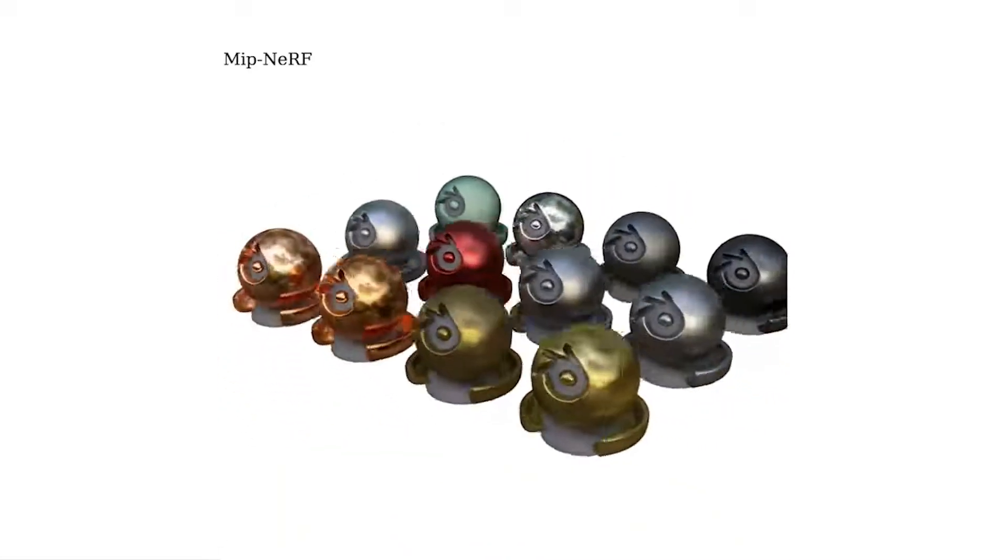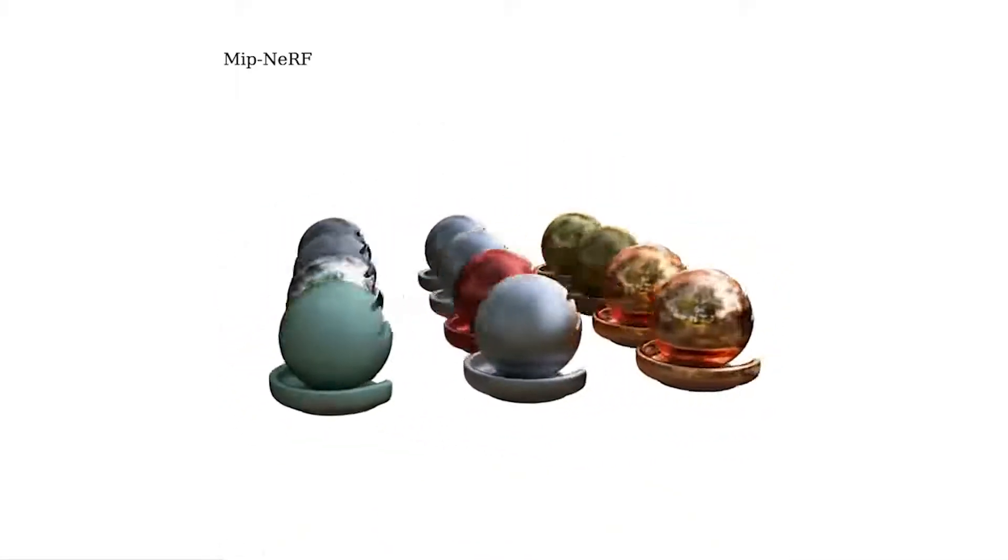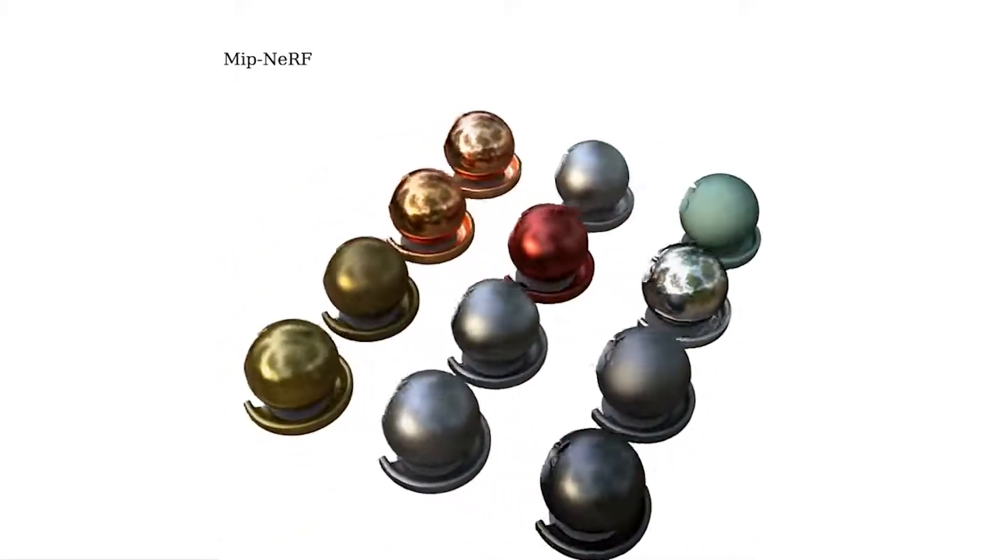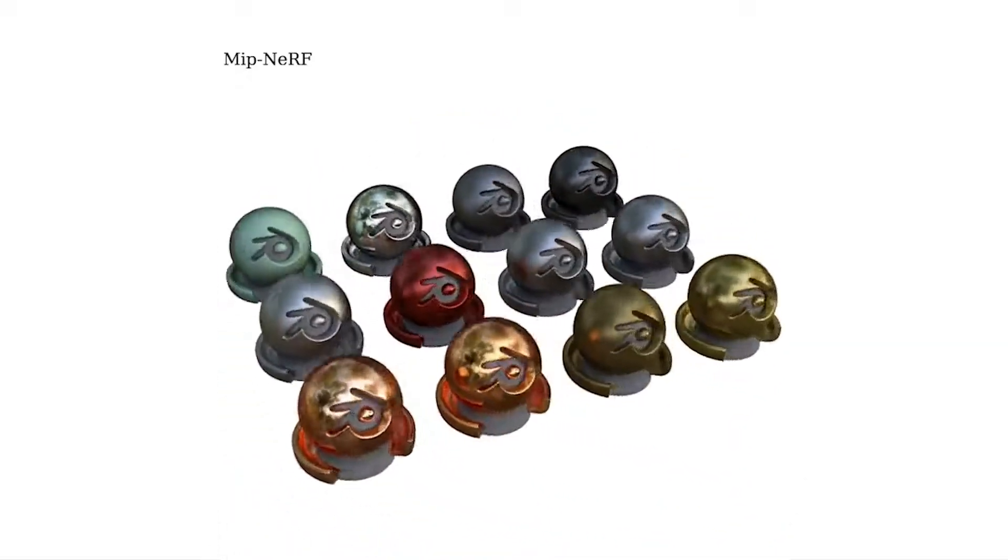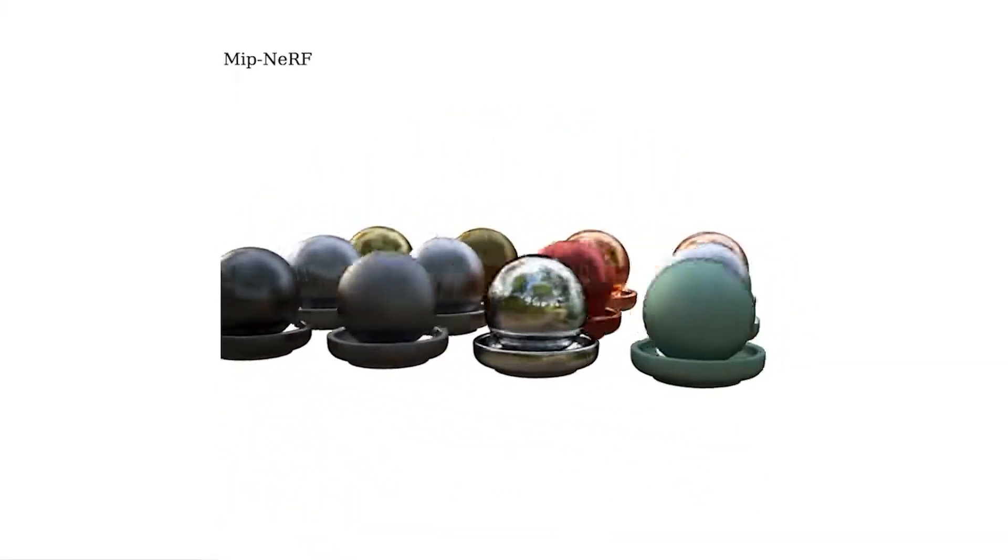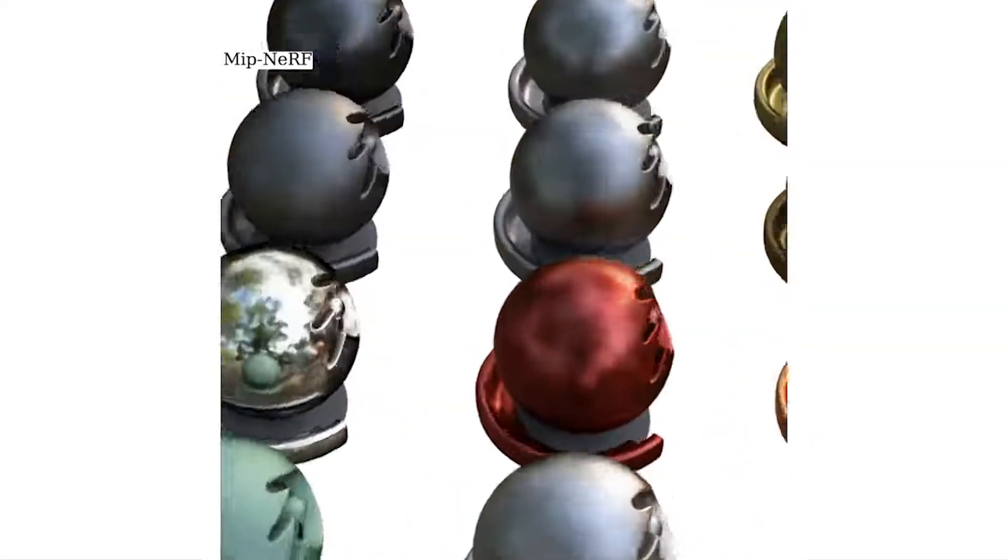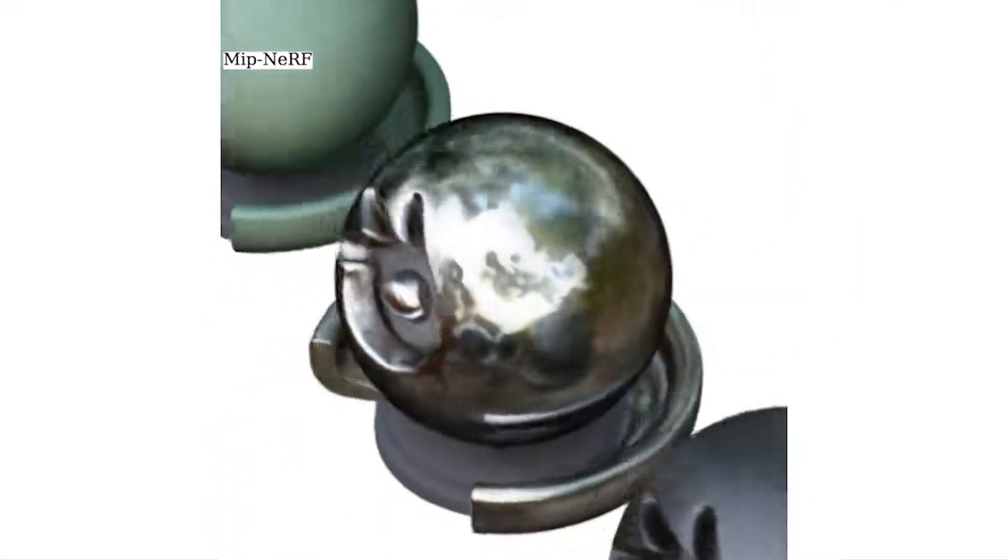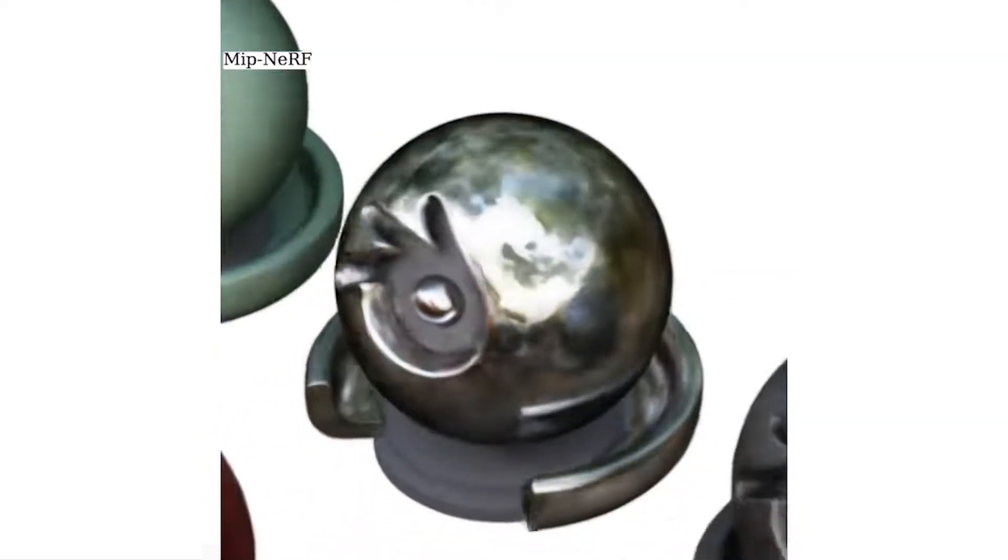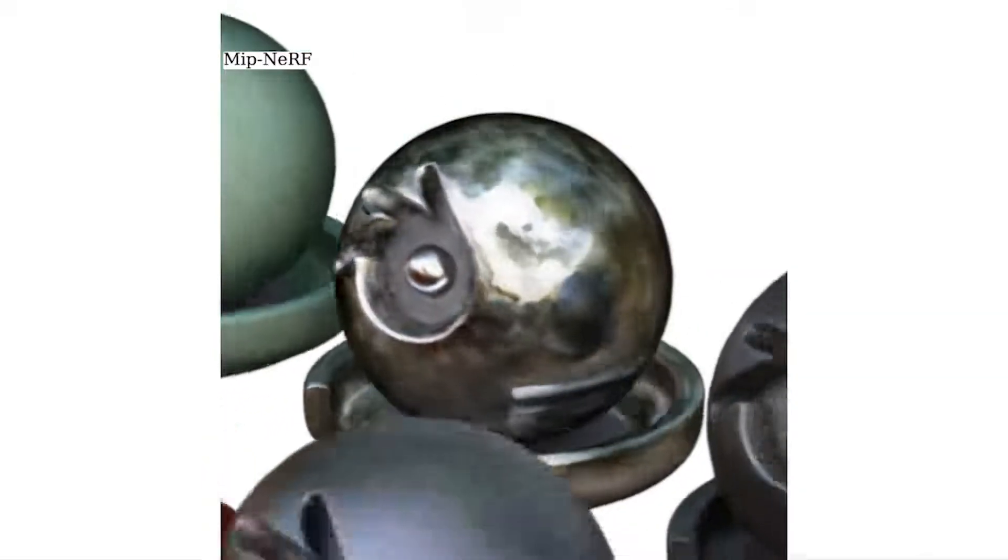Top-performing NeRF-based models like MipNeRF, shown here, are able to represent complex geometry and render novel views that look quite convincing for a fast-moving camera. But in more realistic settings where the viewer doesn't move so quickly, it becomes clear that NeRF is unable to accurately represent and render shiny surfaces with specular highlights and reflections.